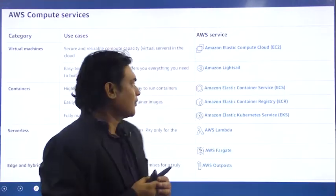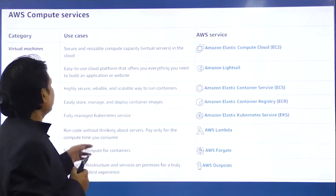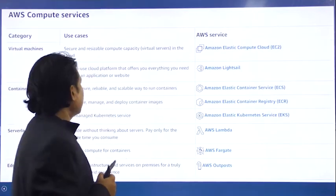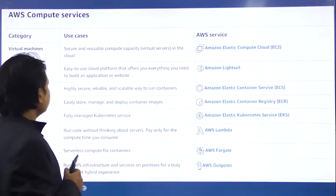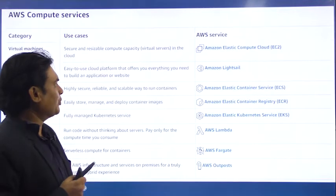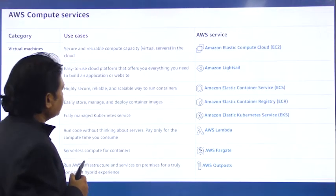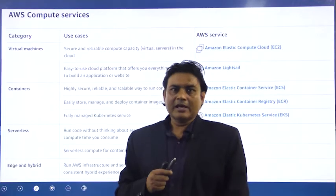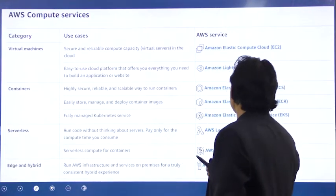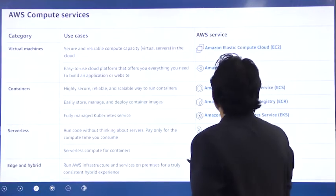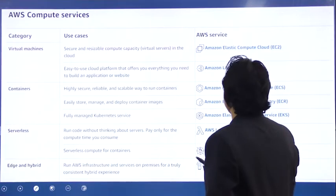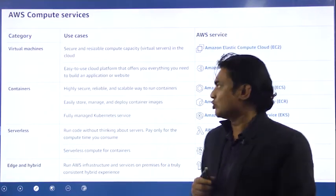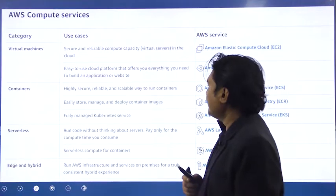Virtual machines are available as an easy-to-use cloud platform that offers everything you need to build an application or website. To provide virtual machine services, Amazon Web Services has important domains: Amazon Elastic Compute Cloud (EC2) and Amazon Lightsail services. These are the two important services where you can avail virtual machine services to develop applications and websites.